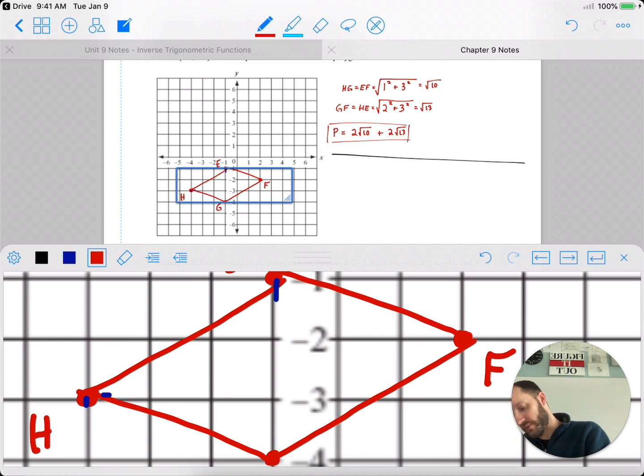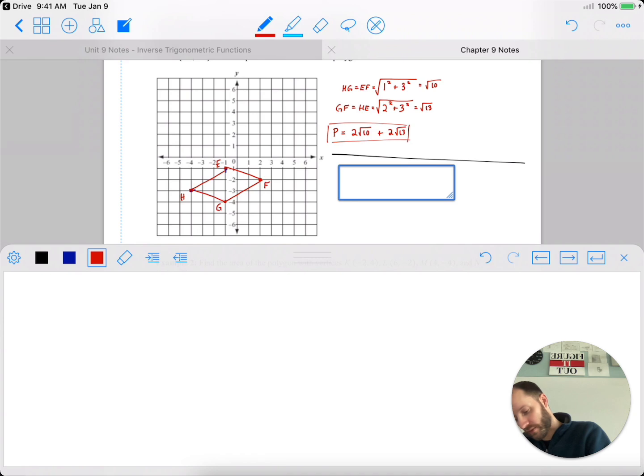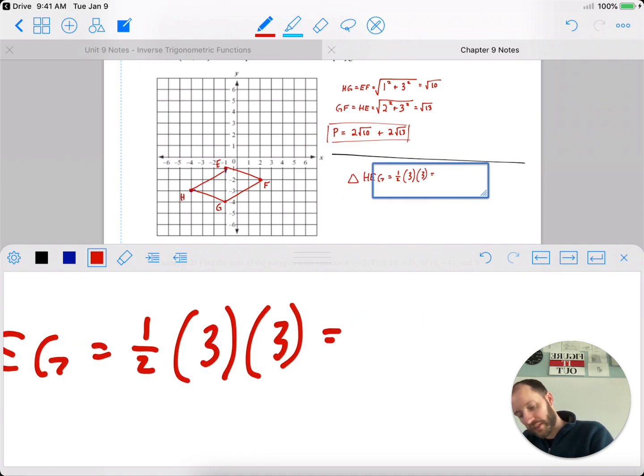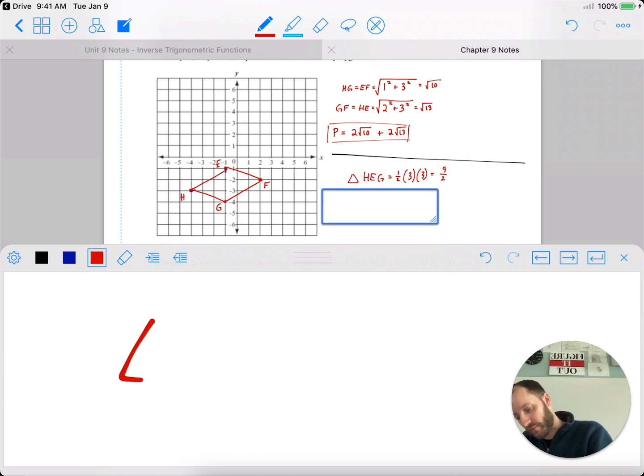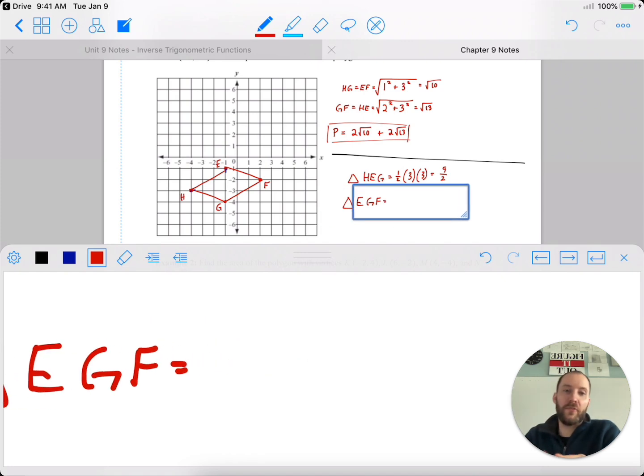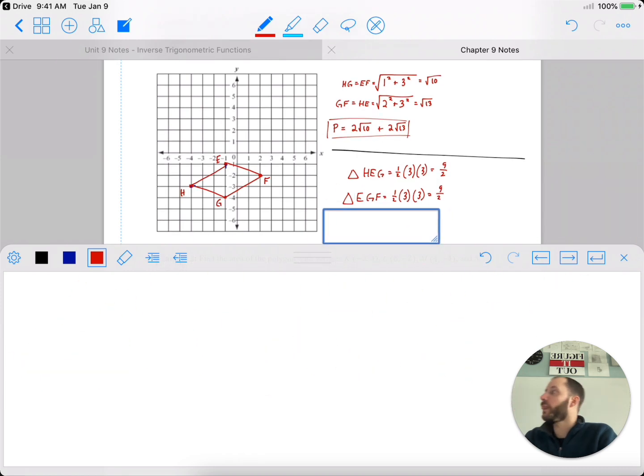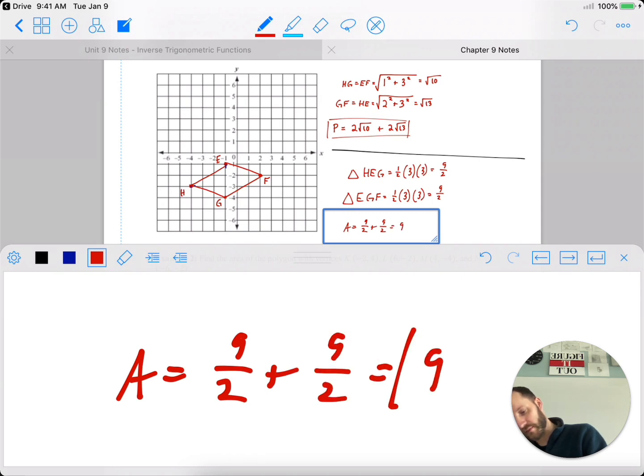So, each triangle has an area of 1 half base times height, so we'll do both triangles. Triangle HEG is 1 half base, which is 3, and its height, which is 3, to give us 9 halves. The other triangle, triangle EGF, again, 1 half base times height, which gives me 9 halves. So, to add it all up, the area is 9 halves plus 9 halves, which is pretty simply 9.